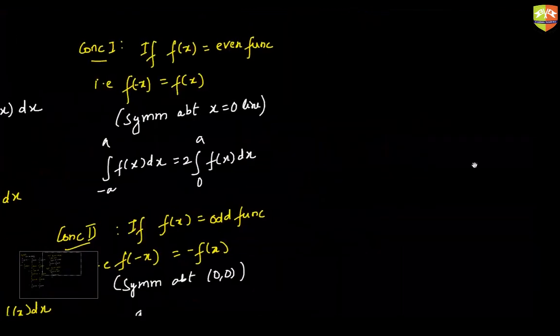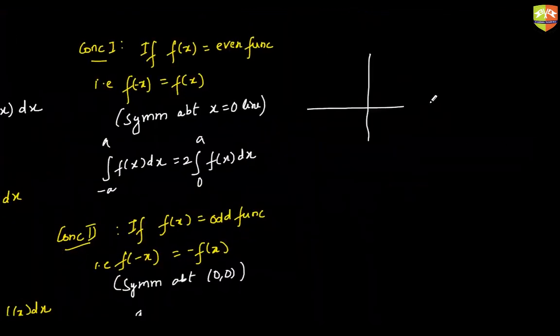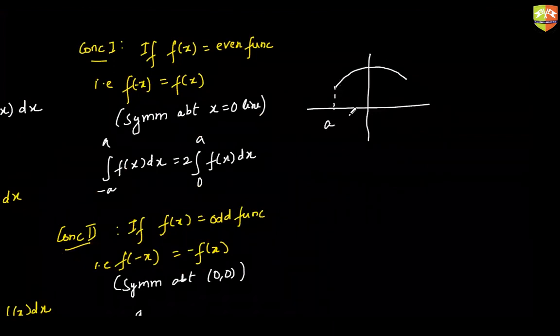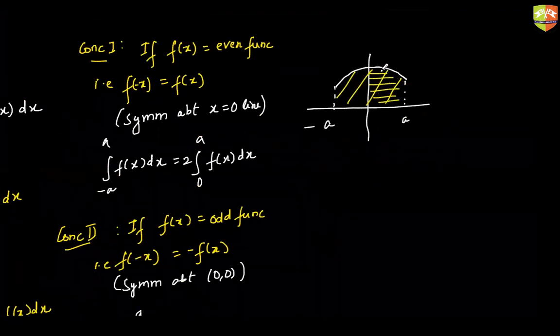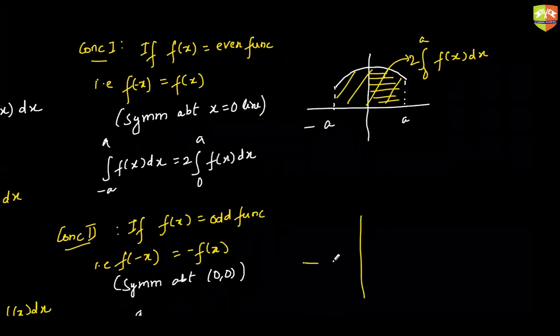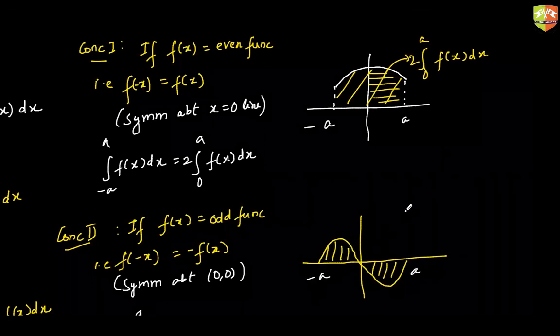It's very obvious that if a function is an even function, the graph will be exactly symmetrical about x equal to 0 line which is your y axis. So instead of finding this area, you can just find out this area and double it up. Your job is going to be done. So this into 2 will be your total area. But when your function is symmetrical about origin, then that means there is a cancellation of area happening. Let's say I have a graph like this. This area and this area will exactly cancel each other out. So integral from minus a to a will vanish. So this area will be 0.